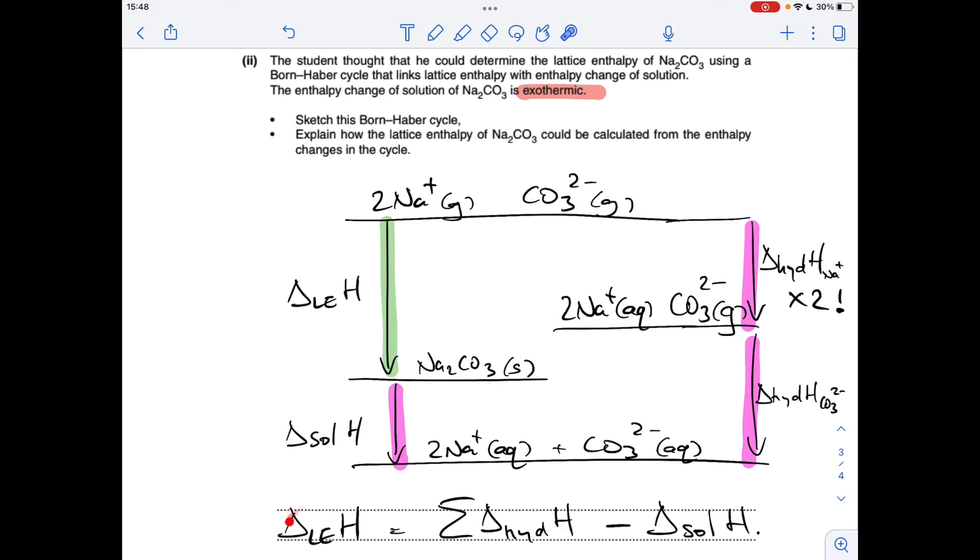So to go from here to here, those are okay but that one is in the wrong direction. So as an equation it would look like that: the lattice enthalpy, this green route here, is equal to the sum of the hydration enthalpies. Remember that would need to be doubled because we've got two moles of sodium ions that would need to hydrate, so the sum of the hydration enthalpies minus, because that arrow is going in the wrong direction, minus the enthalpy change of solution for the sodium carbonate.